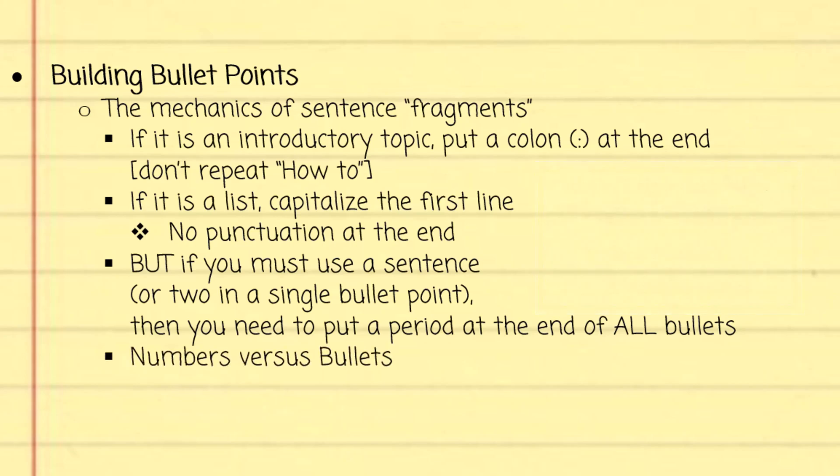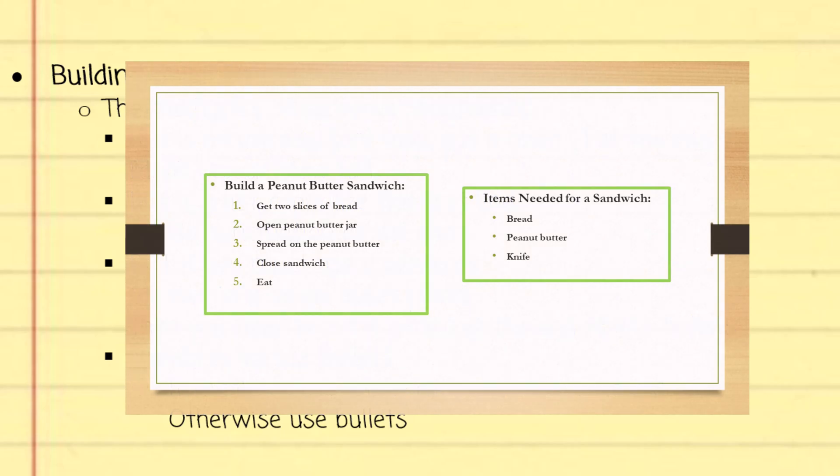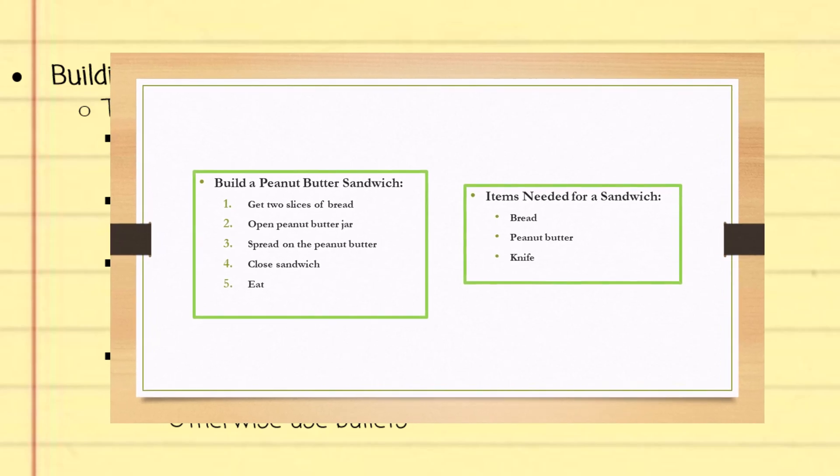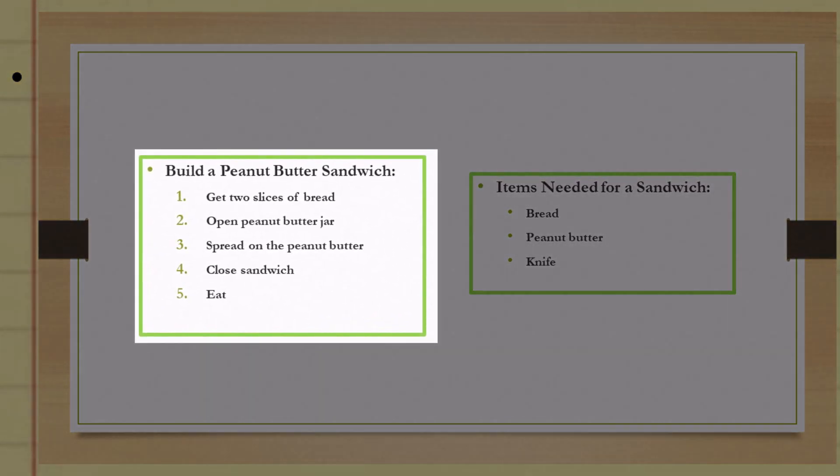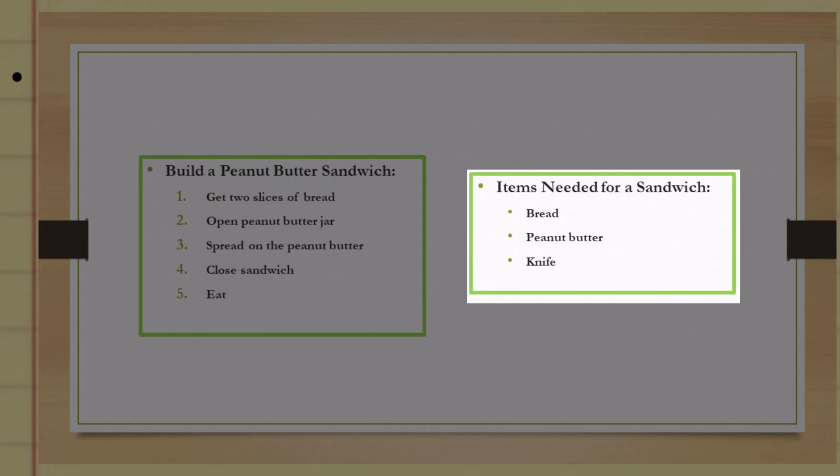Next debate: do I use numbered lists or bullet icons? This is easier than you might think. If a list must follow a specific order, like a sequence of events, then use numbers. Otherwise, stick to bullet icons. See this example of building a sandwich. It has some very specific order to the steps. You wouldn't eat first, you save that for last. But the item list is just that, a list of the things that you need. And you can use it as a bullet point because there is no required order.